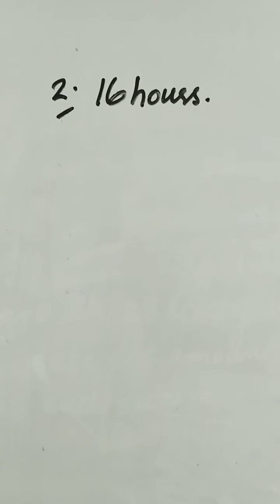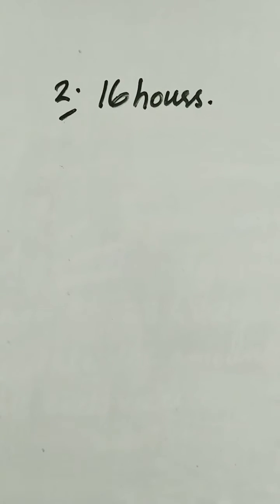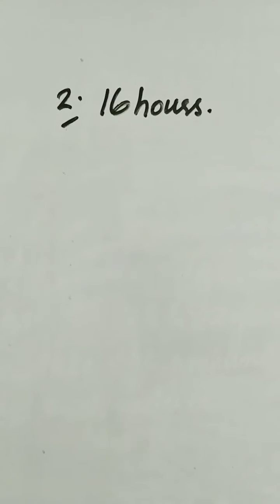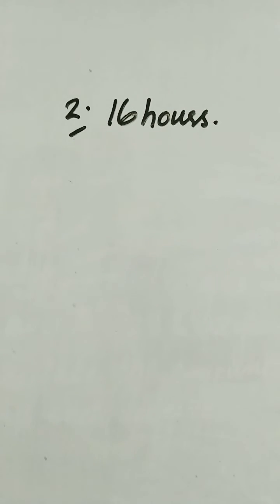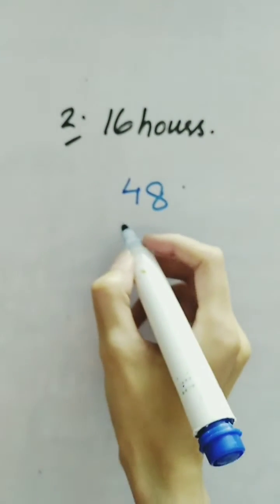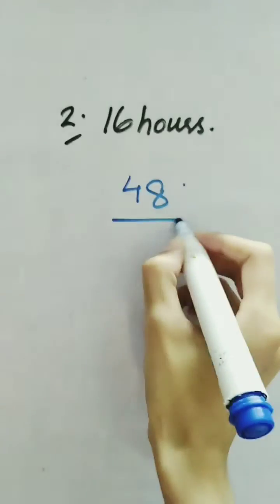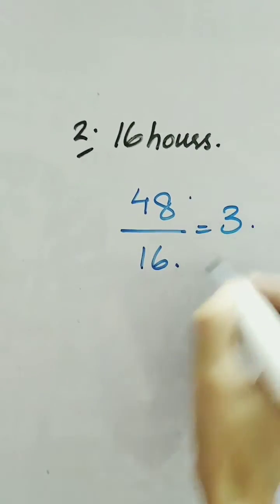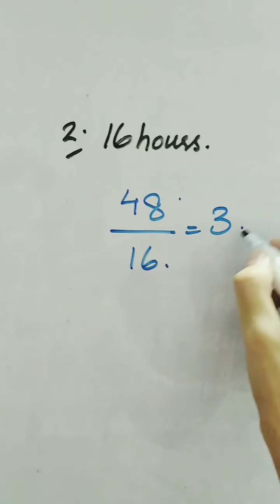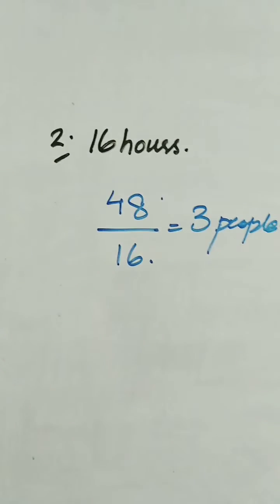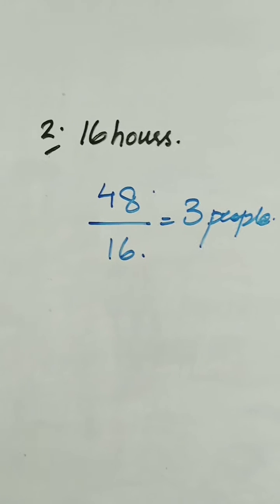In the second part, we need to find how many people are required to perform the task in 16 hours. We know that to perform the task in 1 hour, we need 48 people. We divide 48 by 16 and get 3. So 3 people are required to perform the similar task in 16 hours.